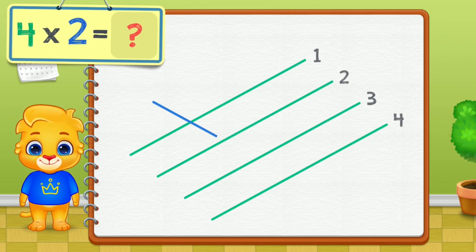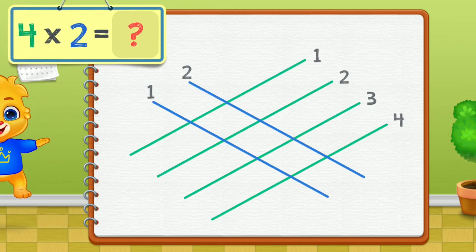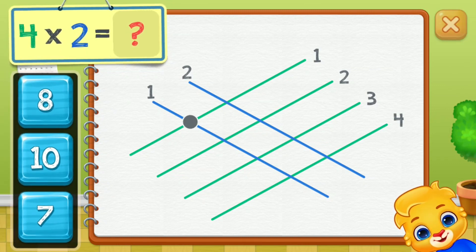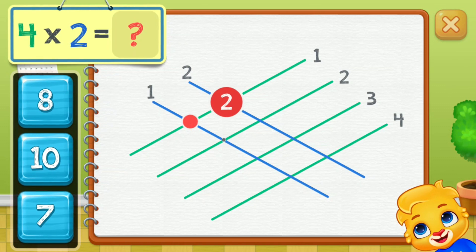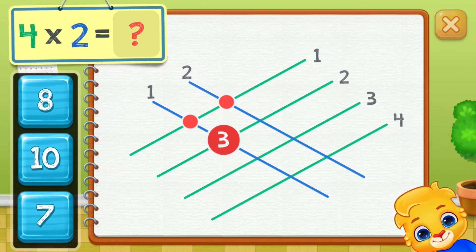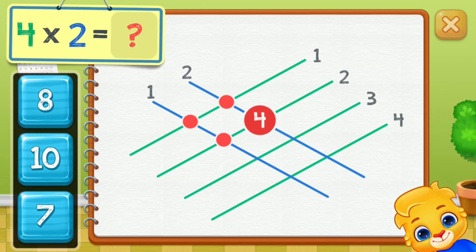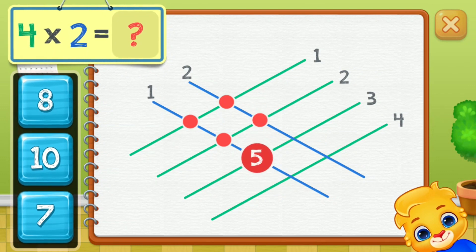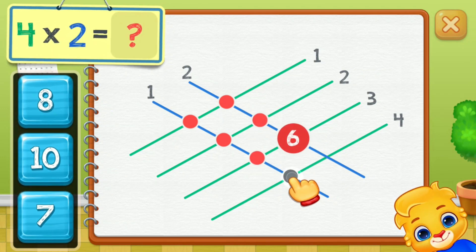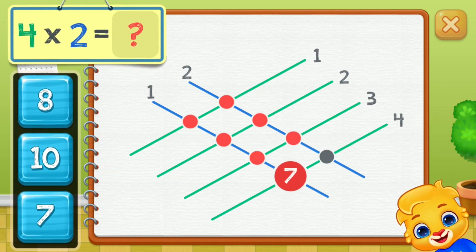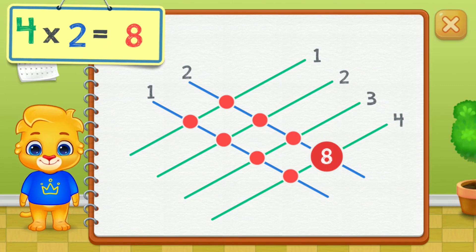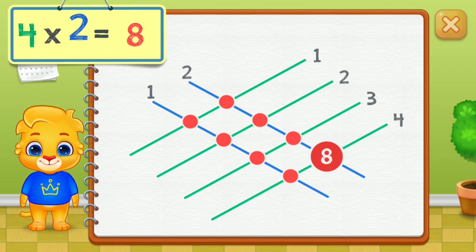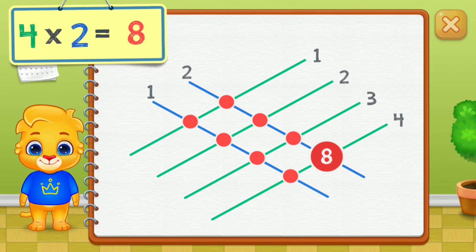Four times two equals... Touch intersection points. Two, three, four, five, six, seven, eight. Four times two equals eight.